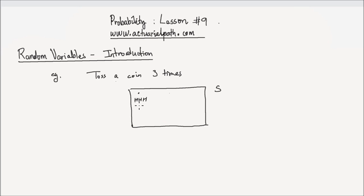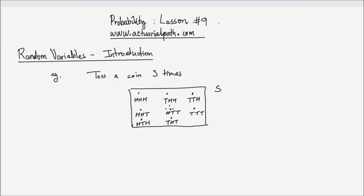Heads on the first toss, heads on the next toss, and heads on the last toss. Or maybe heads, heads, and tails. Heads, tails, heads. Tails, heads, heads. Heads, tails, and tails. Tails, heads, and tails. Tails, tails, and heads. And finally, tails, tails, tails. You have eight points in the sample space.